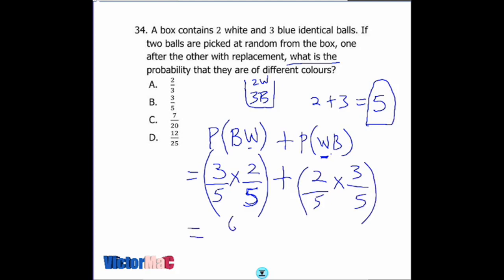When we multiply, we have 3 times 2 equals 6, 5 times 5 equals 25. The same thing: 2 times 3 equals 6, 5 times 5 equals 25. When we add up, our answer is 12 over 25, option D.